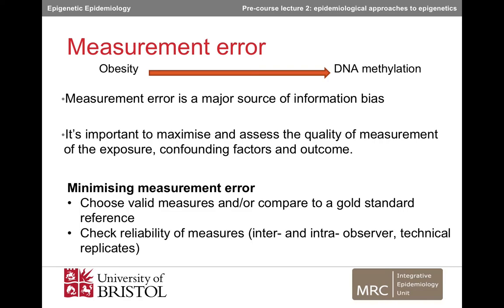When measuring the outcome — DNA methylation — measurement error might arise from the use of poor-quality DNA samples, errors in the lab, or poor-quality assays. Validity can be checked by comparing DNA methylation in the same samples using two different methods, for example pyrosequencing and an array. Reliability can be assessed by comparing DNA methylation levels obtained from technical replicates of the same samples.